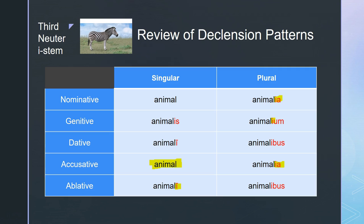The neuter third declension also has an I-stem variation. The only difference is still just extra I's. The ablative singular is an important one though because it actually changes the E ending from the regular third to an I — so the E is not even there anymore. The others are just extra I's in the nominative, genitive, and accusative plural.